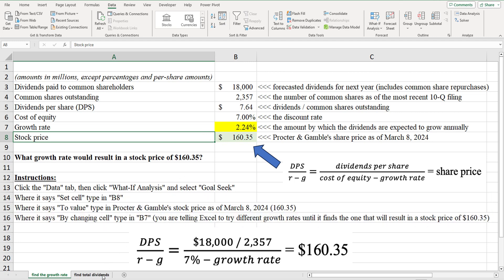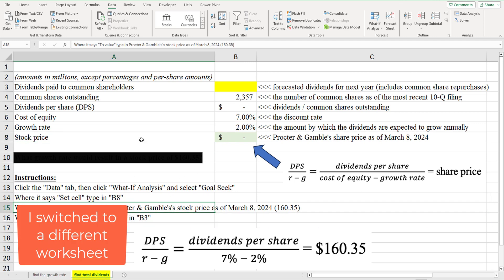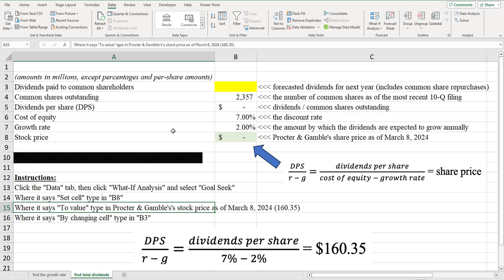But now let me show you another example of how we can reverse engineer the share price. So in the previous example, I assume we don't know what the market is assuming about the growth rate. But in this example, let's assume we do know.